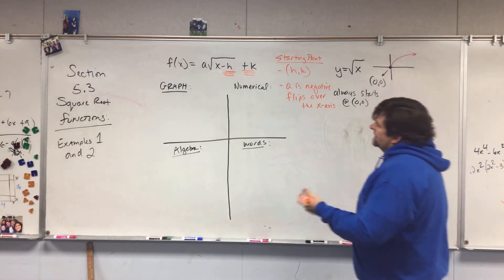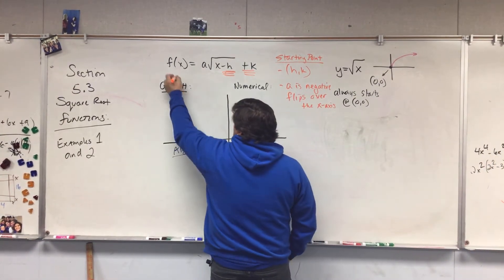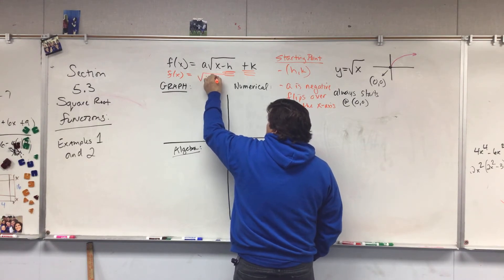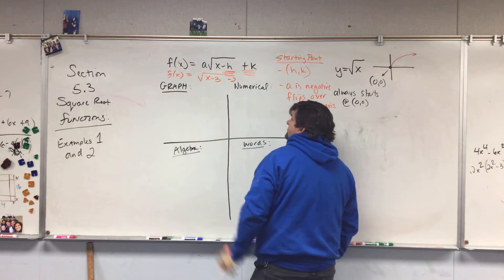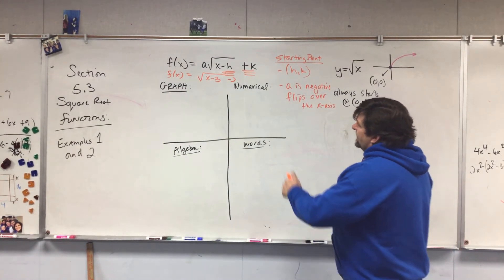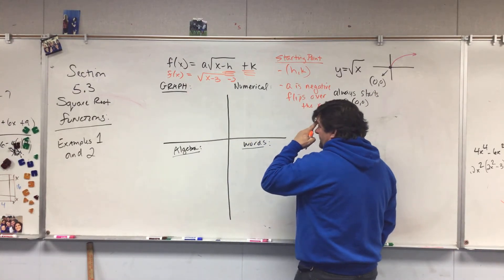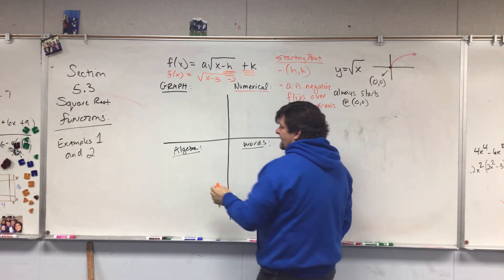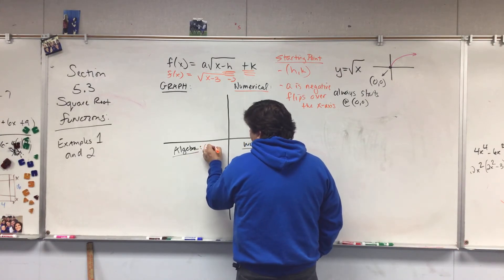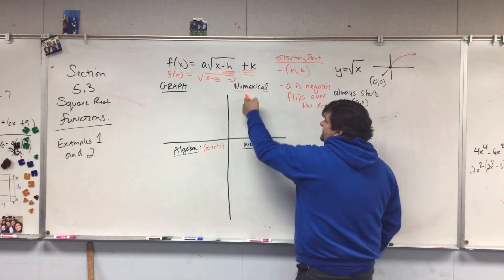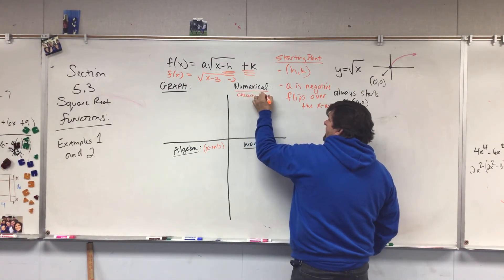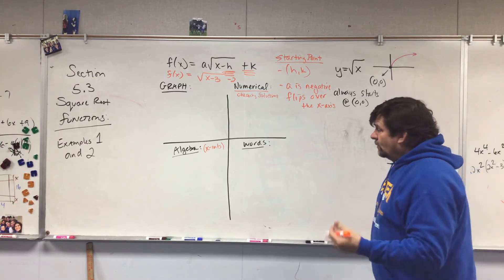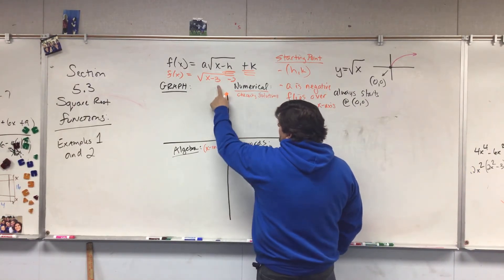Let's tackle an equation. Let's call it f of x equals the square root of x minus three, minus two. We've got a couple of different things we can do: we can build the graph first, put it in Desmos and look at it, do the algebra first to find the x-intercept, check solutions numerically, or describe what we're given. I'll start with what we're given and work from there.